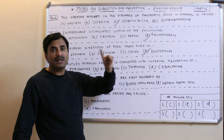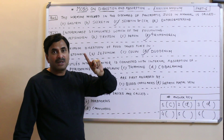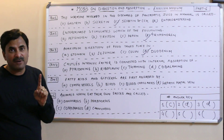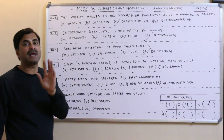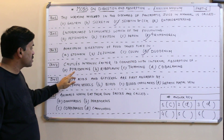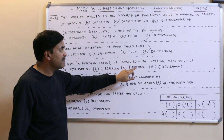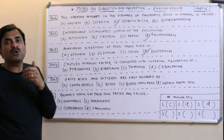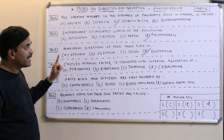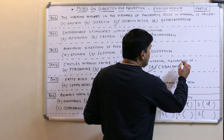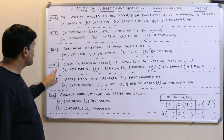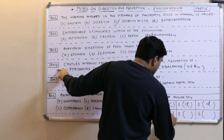Question number four: Castle's intrinsic factor is connected with the internal absorption of — remember that Castle's intrinsic factor is responsible for the absorption of vitamin B12, also called cyanocobalamin, in the stomach. The options are pyridoxine, riboflavin, thiamine, or cobalamin. Cobalamin means cyanocobalamin or vitamin B12. The answer to question number four is D.